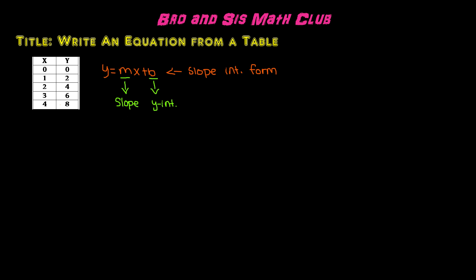We need to find the slope and y-intercept from these coordinates in order to write our equation. The slope is always rise over run.